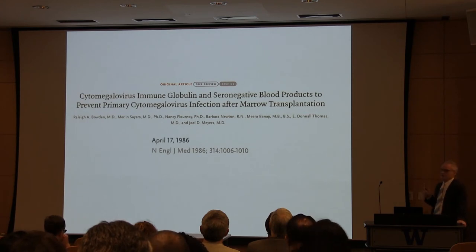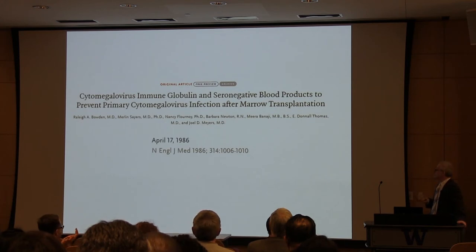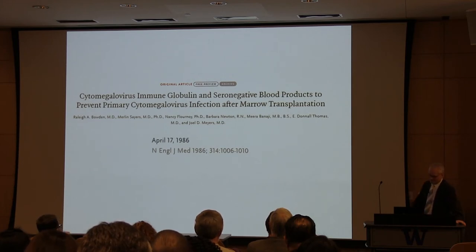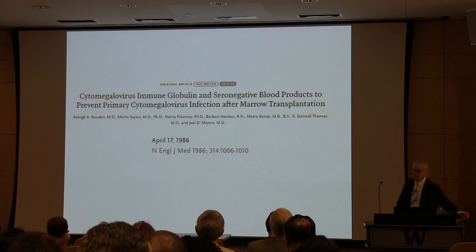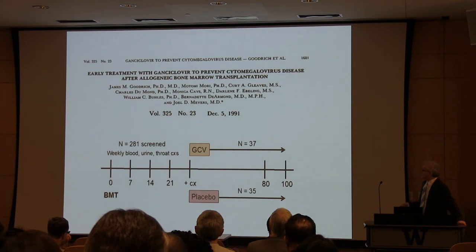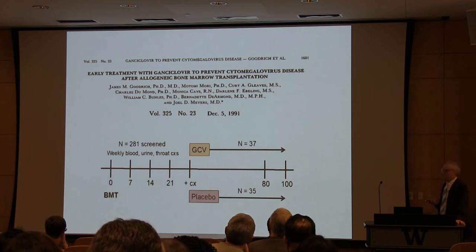At the same time, they discovered that CMV in seronegative recipients is likely due to unscreened blood products. In a pivotal study conducted by Henry Bowden and Joe Myers and their team, they demonstrated that using CMV-seronegative blood as the blood supply literally eliminates CMV in the donor-negative recipient-negative population, still practiced today, reducing the risk to maybe 1% or so. But seropositive patients, or those with a seropositive donor, remained the major problem.